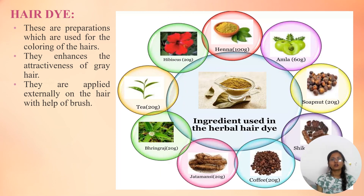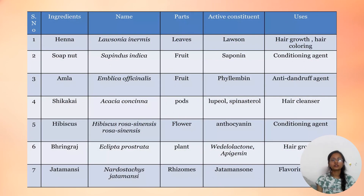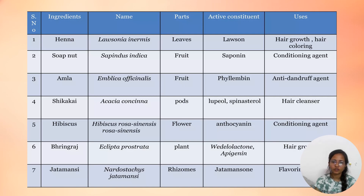Next topic is hair dye. Hair dye is a preparation used for the coloring of hair. They enhance the attractiveness of gray hair and are applied externally on the hair with the help of a brush. Some herbal ingredients used in herbal hair dye are Hibiscus, Henna, Amla, Soap Nut, Shikakai, Coffee, Jatamansi, Bhringraj, and Tea. In the ingredient table: Henna — leaf, used for hair growth and hair coloring. Soap nut — fruit, used for conditioning. Amla — fruit, used as anti-dandruff. Shikakai — pods, used as hair cleanser. Hibiscus — flower, used for conditioning. Bhringraj — plant, used for hair growth. Jatamansi — rhizome, used as flavoring.